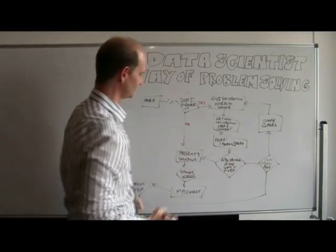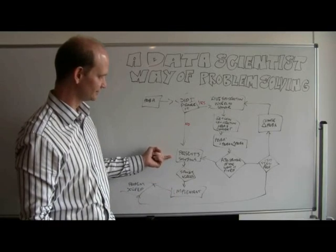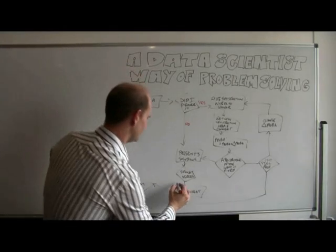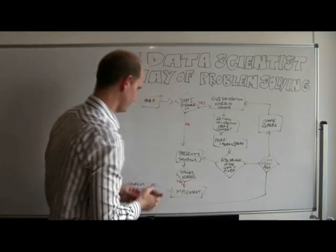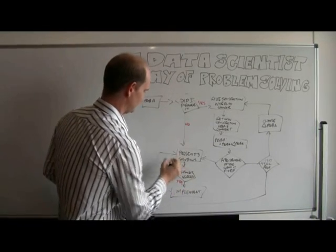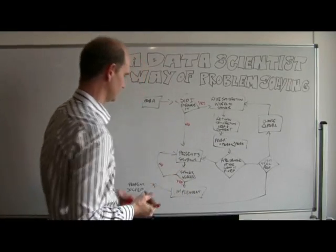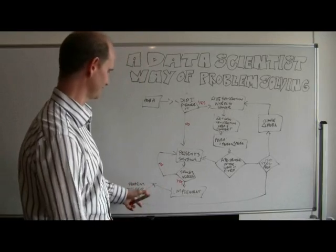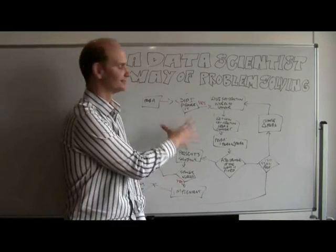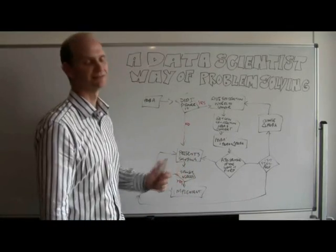But if it's no, we go with the typical sense of presenting three solutions. Does the sponsor agree with one? If yes, implement. If no, go find another three solutions and get your problem solved. Now that's the traditional path — someone else gives you a problem and you go and solve it for them.